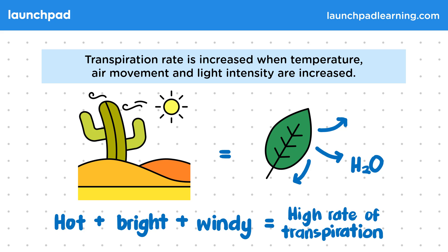You need to be able to explain how different factors affect the rate of transpiration. For example, high light intensity increases the rate of photosynthesis and therefore the use of water, with the result that this will increase the rate of transpiration. Light intensity refers to how bright a light is, and this will increase transpiration due to increasing the rate of photosynthesis. This is covered elsewhere in the course.